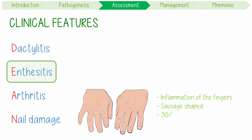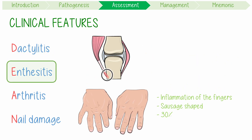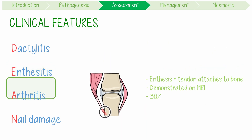E stands for enthesitis, which is the inflammation of the enthesis — the point where a ligament or tendon attaches to the bone. This is hard to pick up on a physical examination, but it's readily demonstrated on MRI or ultrasound. It occurs in 30% of patients.